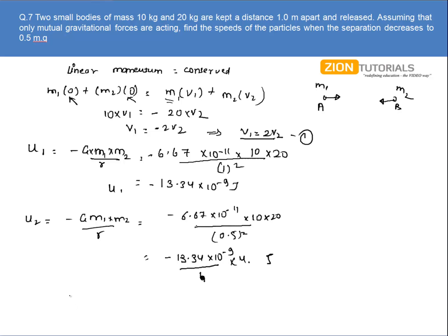Now what I have to do is conserve the energy. The initial energy, that was only gravitational potential energy, will be converted into the gravitational potential energy when the distance reduces to 0.5, plus the kinetic energy of mass 1, plus kinetic energy of mass 2.